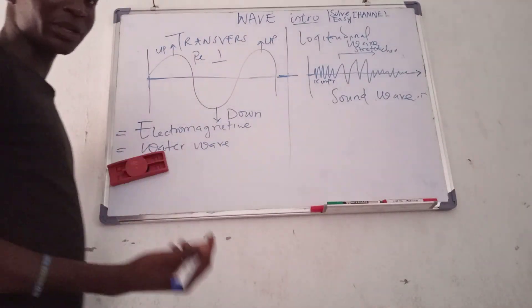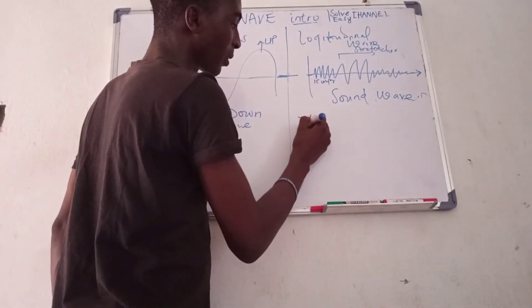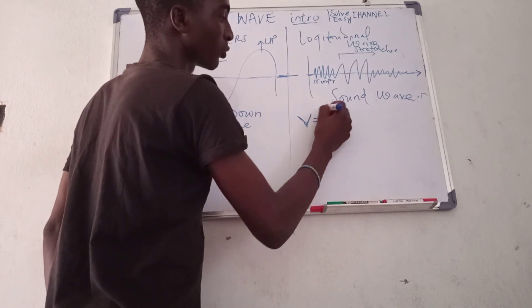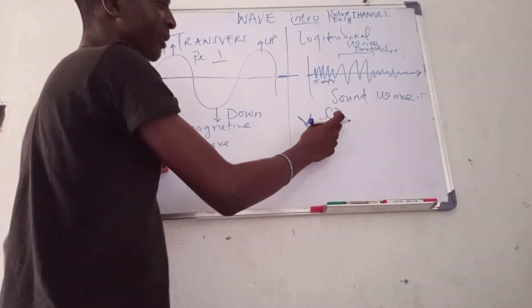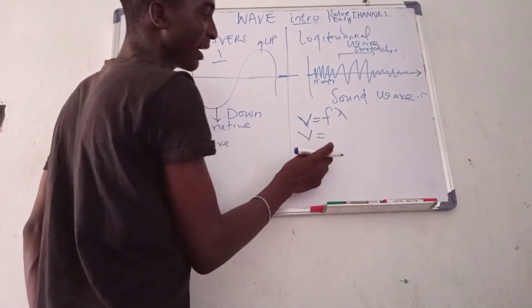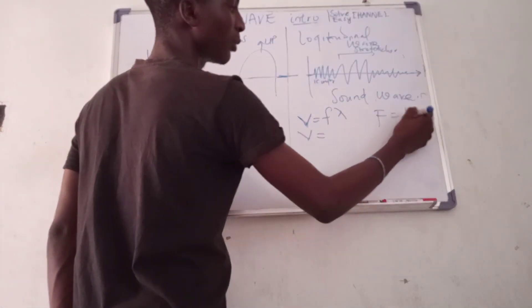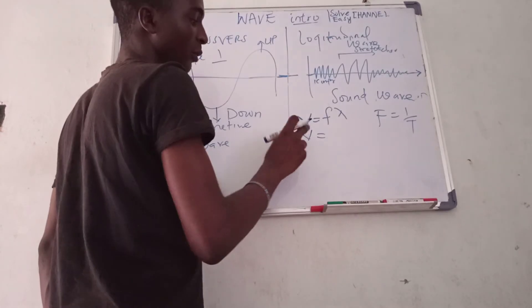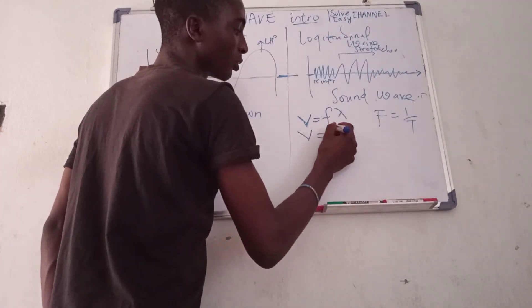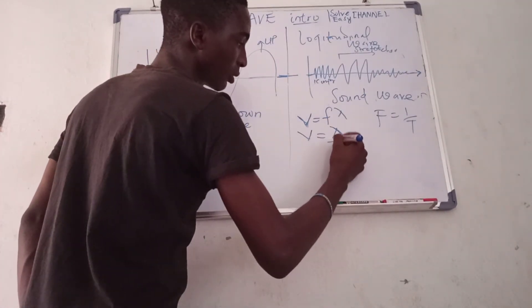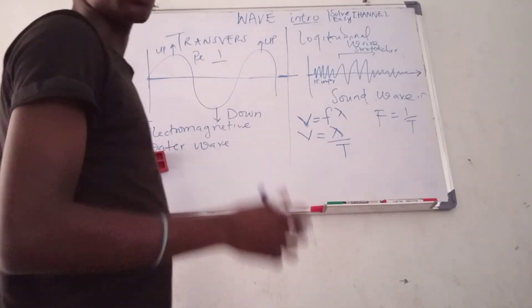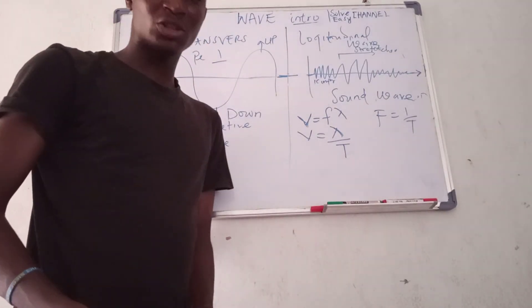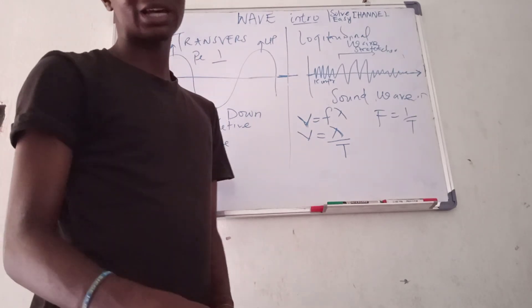So the last thing I will be talking about today is our wave speed, which is equal to our frequency multiplied by our wavelength. So you know we can modify this since our frequency is equal to 1 over period T. Our wave speed can also be written as lambda over T. So these are the basics of waves that you need to know before we go into the calculation aspect.